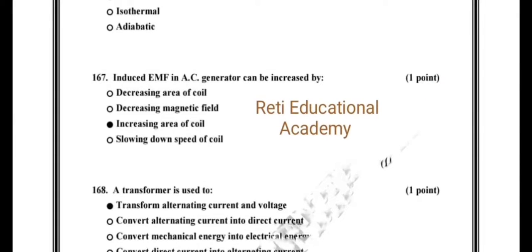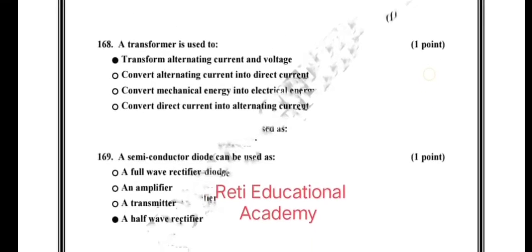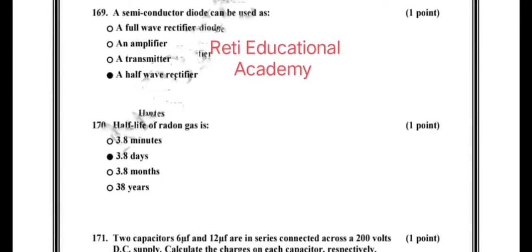Question number 166: the process in which no external work is performed is called, and the correct option is isochoric. Question number 167: induced EMF in an AC generator can be increased by increasing the area of the coil. Question number 168: a transformer is used to transform alternating current and voltage. Question number 169: a semiconductor diode can be used as a half wave rectifier.